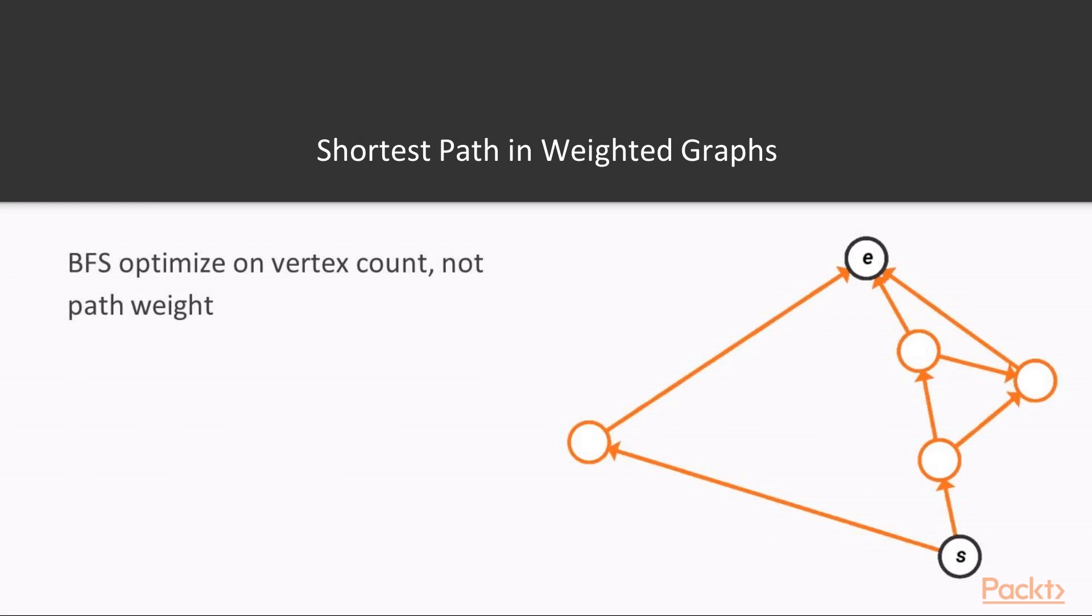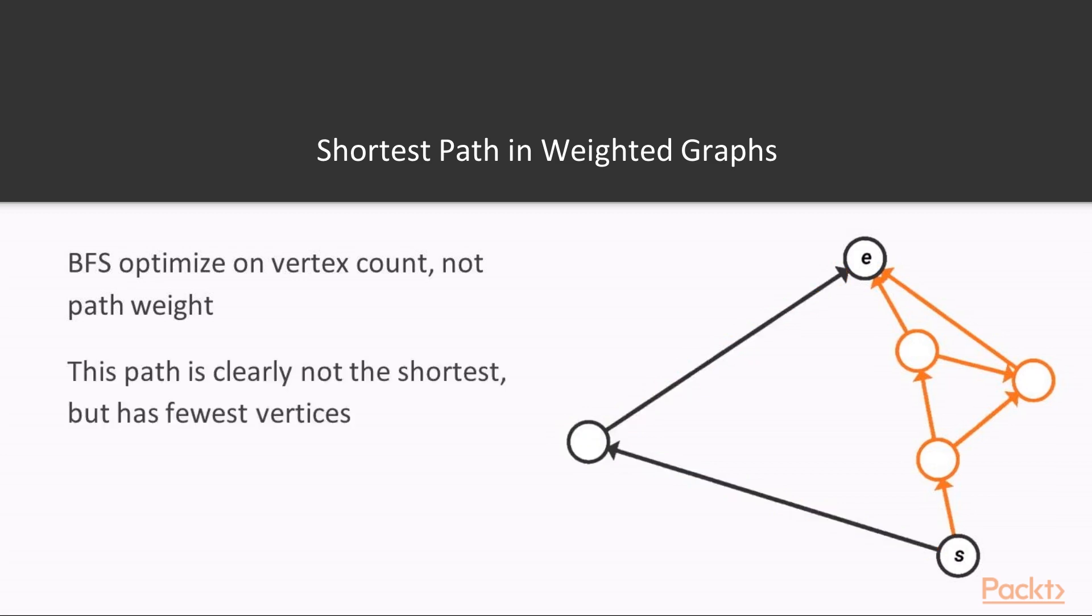The breadth-first search algorithm we saw in the previous section finds the path with the shortest vertex count, but doesn't take path weight into account. Take this graph as an example. We want to find a path from s to e. The length of an edge is equal to the weight of the edge. Breadth-first search would find the shown path, which only goes through one extra vertex, but it is clear to see that the path found is not the shortest. The shortest path goes through more vertices than the path found by breadth-first search, but has a much lower path weight.